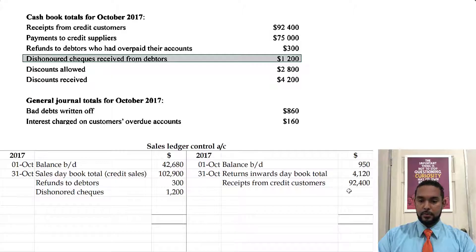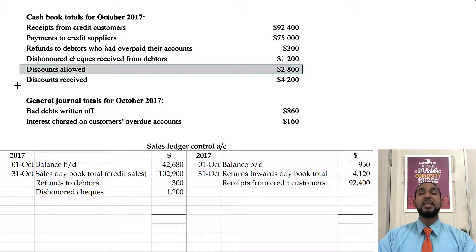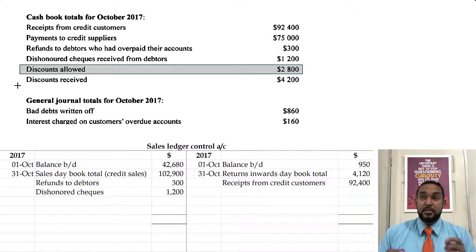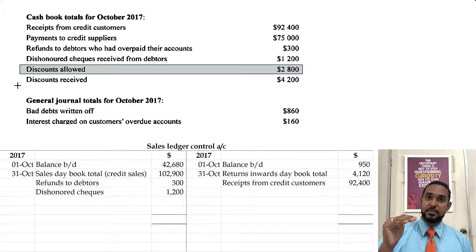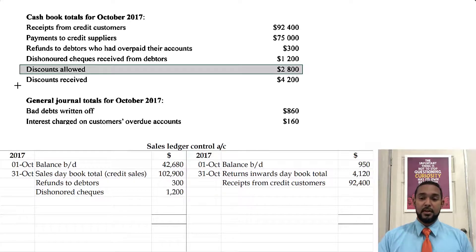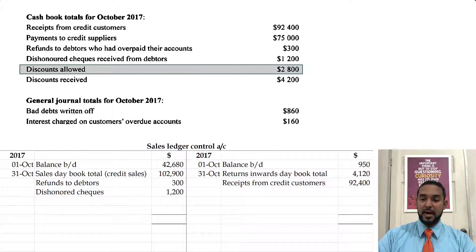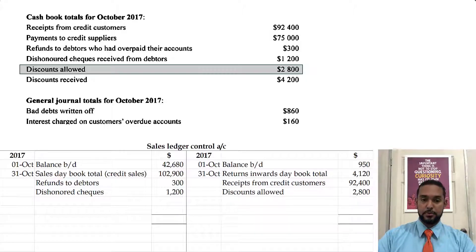For the next item, which is discounts allowed, that is where we allow our customers a discount. In other words, we allow them to pay less — we basically reduce their debt, which means we are also reducing our asset of debtors, which requires a credit to the control account.